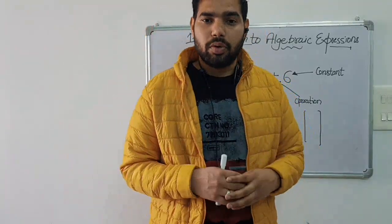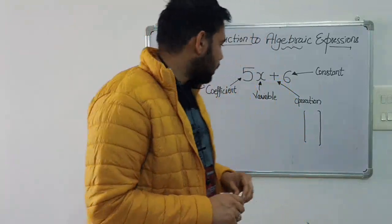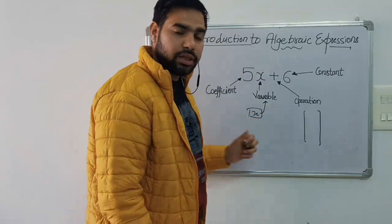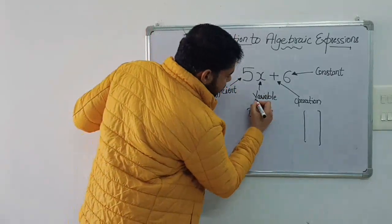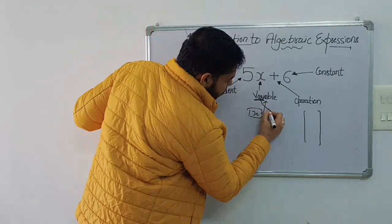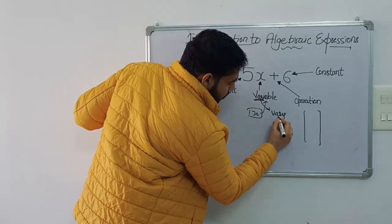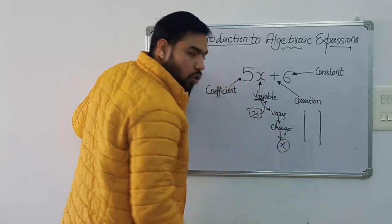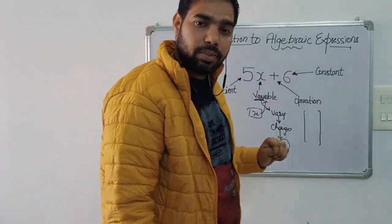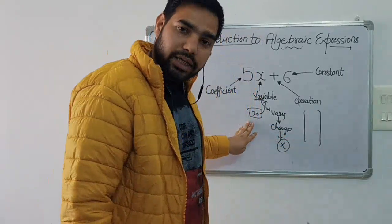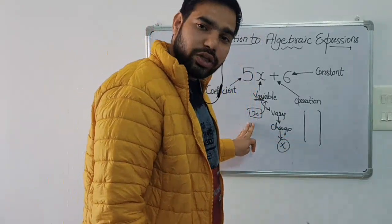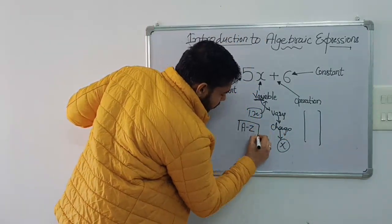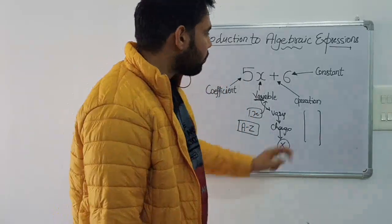Now, what is a variable? In mathematics, when we have to find something unknown in a problem, what do we do? We start assuming — let it be X. This X is known as a variable. The word 'variable' contains 'vary', which means whose value is not fixed. We can use any alphabet from A to Z as a variable in mathematics.